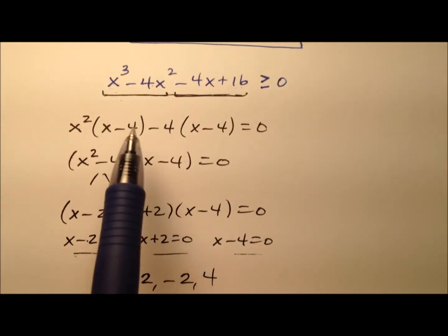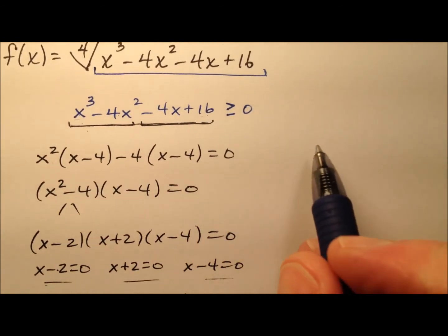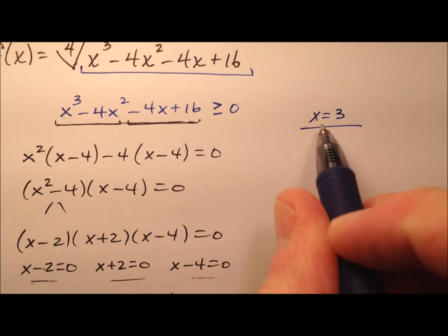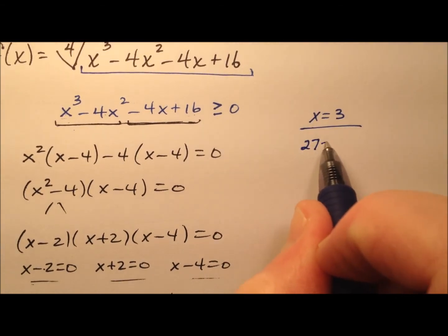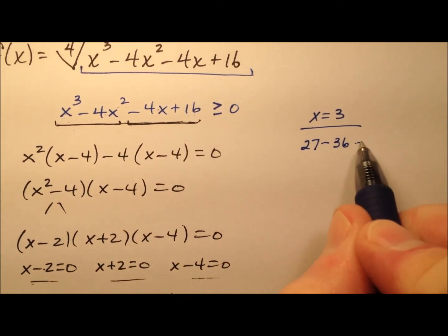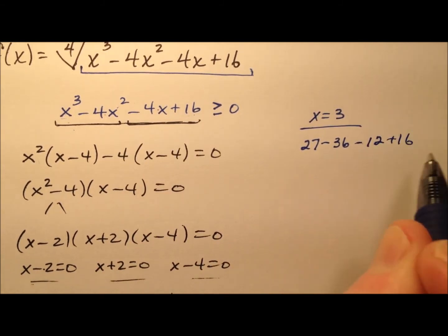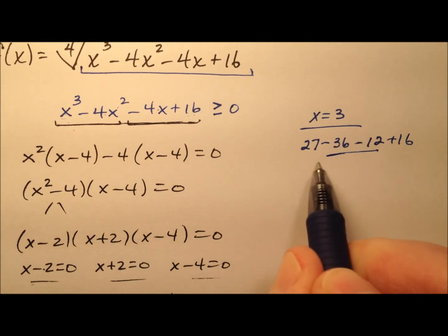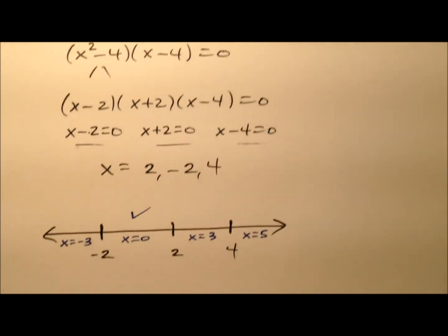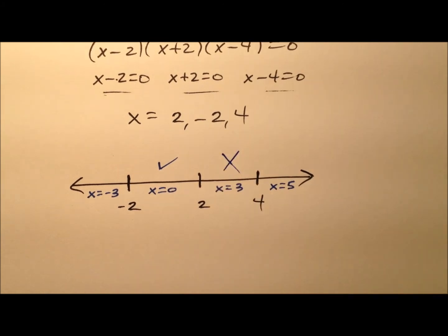So let's try positive 3. So 3 cubed, and we'll just jot my work down over here. So x equals 3. So it'll be 3 cubed minus 4 times, well 9 is 36 minus 4 times 3 is 12 plus 16. So we have negative 48 and positive 43. So definitely it's going to be negative. So that's a no-go right there.